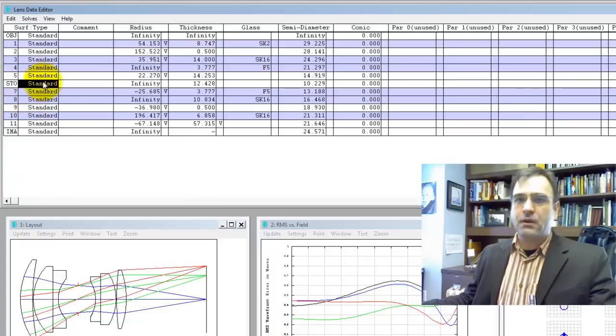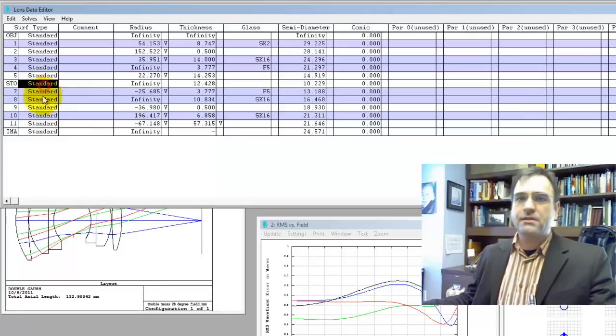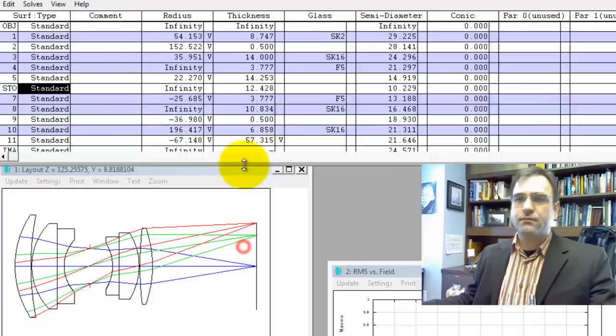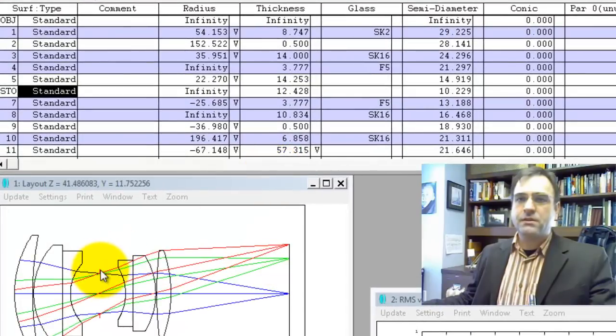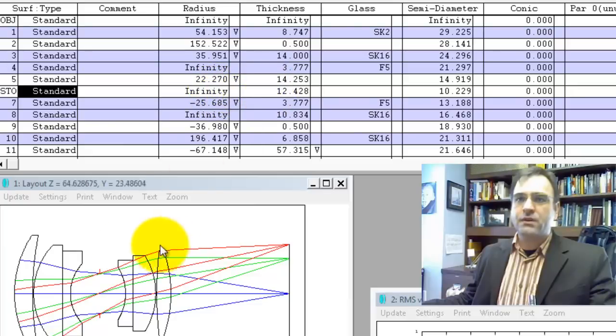Right now we've got the aperture stop and notice I click on the stop. Let's get this cleaned up here. I click on the stop and this surface highlights. So that's one thing neat about ZEMAX. In surface three, this surface gets highlighted here.